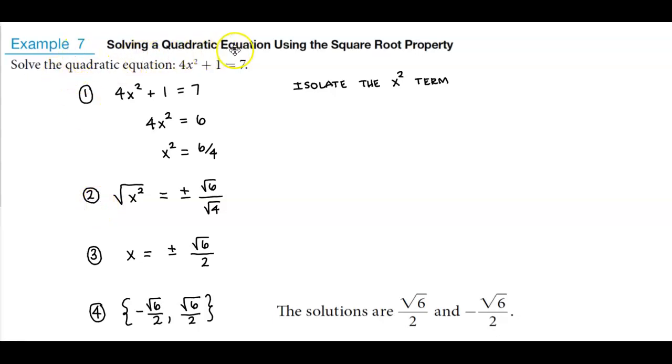Example 7. Solving a quadratic equation using the square root property. We're going to solve the quadratic equation 4x squared plus 1 equals 7.